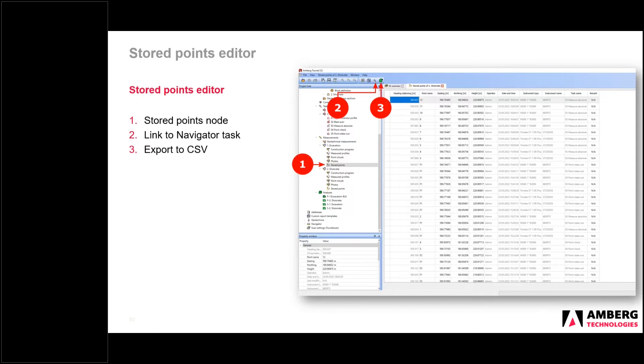We can export the data to CSV at the moment, and that will export everything you see here in the table, all of these columns, and in addition, it will export attribute information, such as the deviations that you store the points.